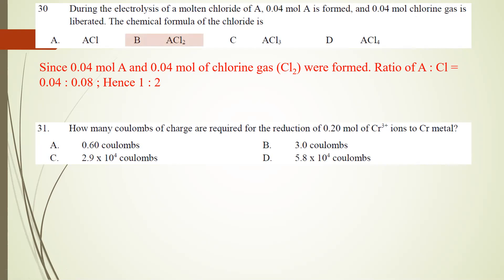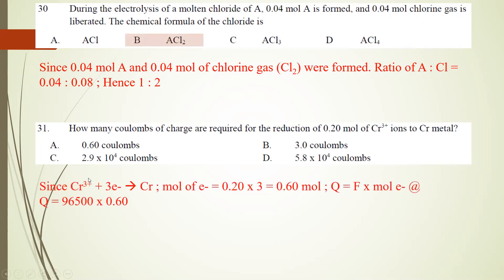Number 31: how many coulombs of charge are required for the reduction of 0.2 mol of Cr3+ to chromium metal? The half-equation is Cr3+ + 3e- → Cr. Moles of electrons = 0.2 × 3 = 0.06 mol. Q = Faraday constant × moles of electrons = 96500 × 0.06 = 5.8 × 10^4 C.